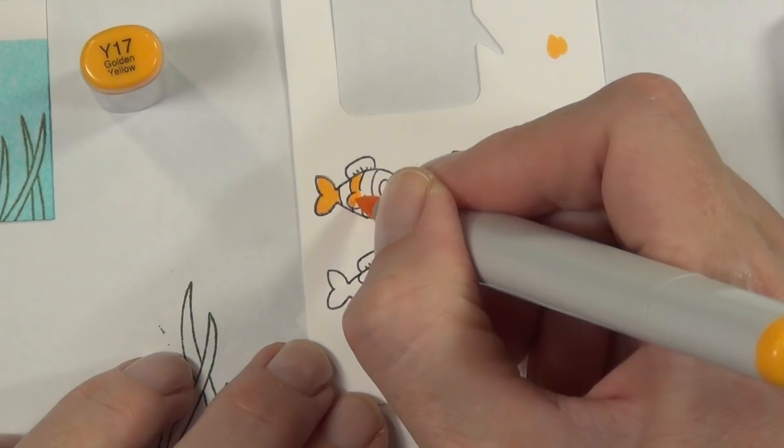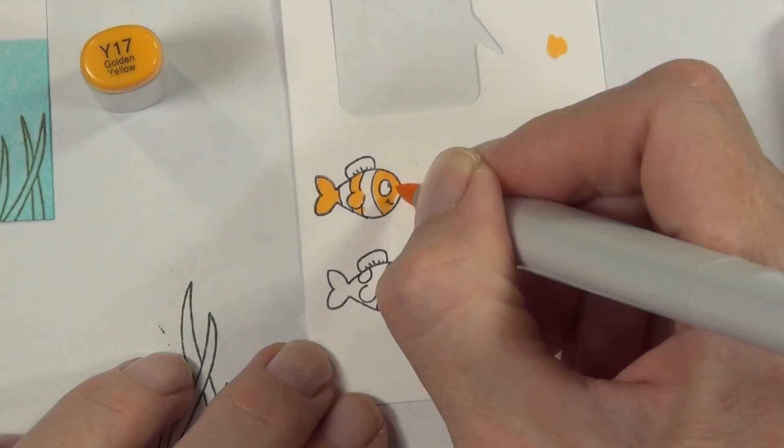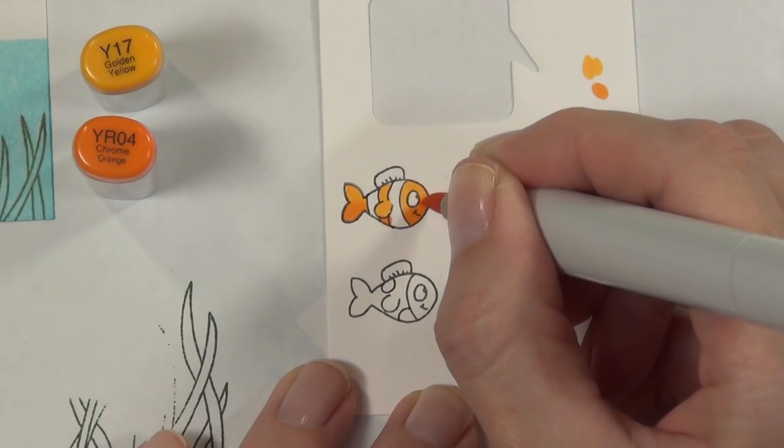I have come in with my Copic multiliner and actually changed them up a little bit just to add some fun to my fish tank. So this is Nemo—you might have heard of him. He's an anemone fish or clownfish depending on what you want to call it.